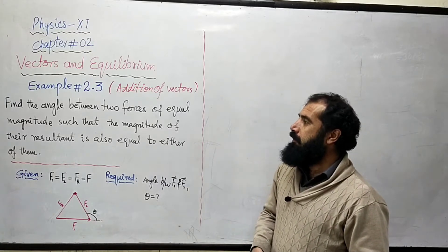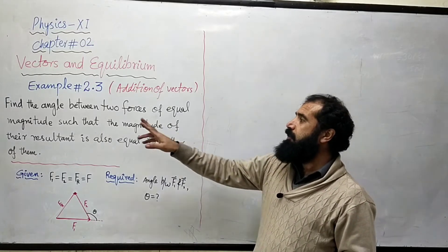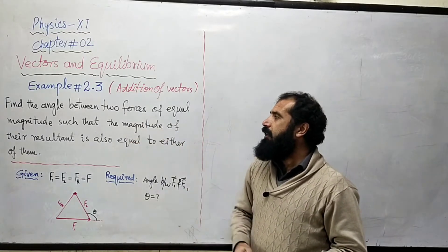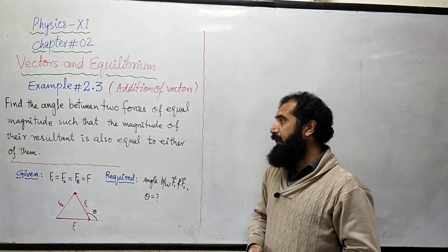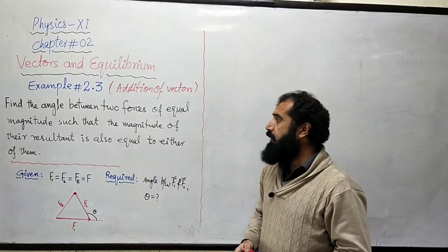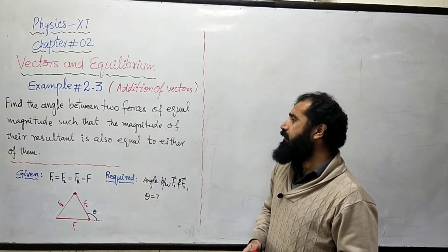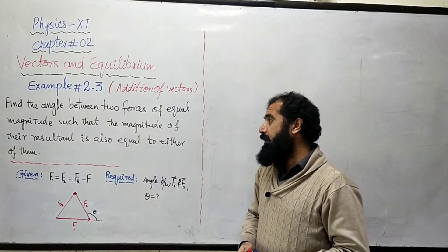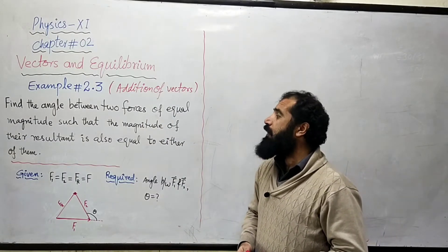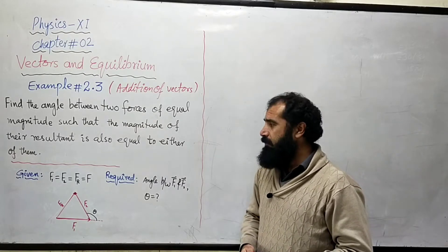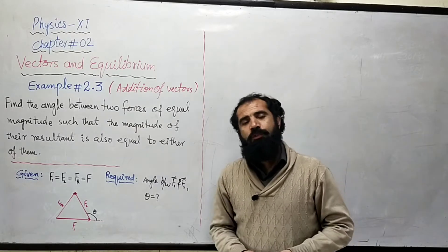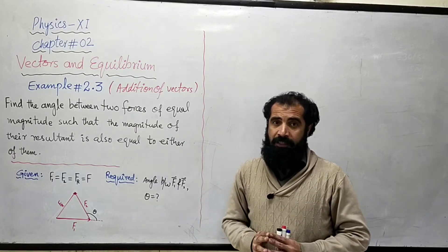Yahaan par kaha gaya hai ki: find the angle between two forces of equal magnitude such that the magnitude of the resultant is also equal to either of them. There are two forces which are equal in magnitude.